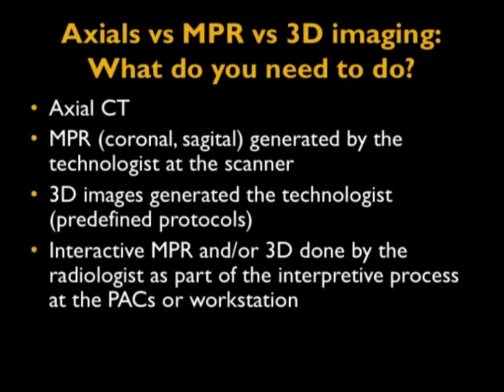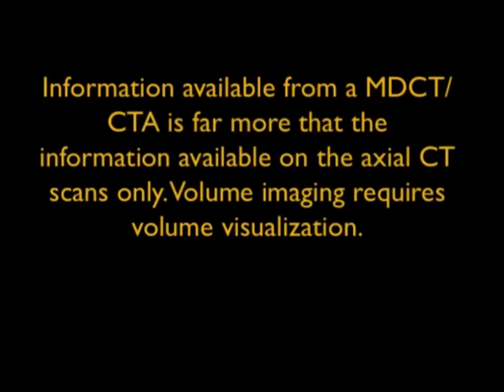When I speak about axial, multi-planar, and 3D and ask what you need to do, I always say all of them, though it will depend on the specific case. Conceptually, even the easiest normal should be looked at in 3D or multi-planar because it's very easy to miss things on axial only. When you do the other planes, things become more obvious. And this is nothing new.